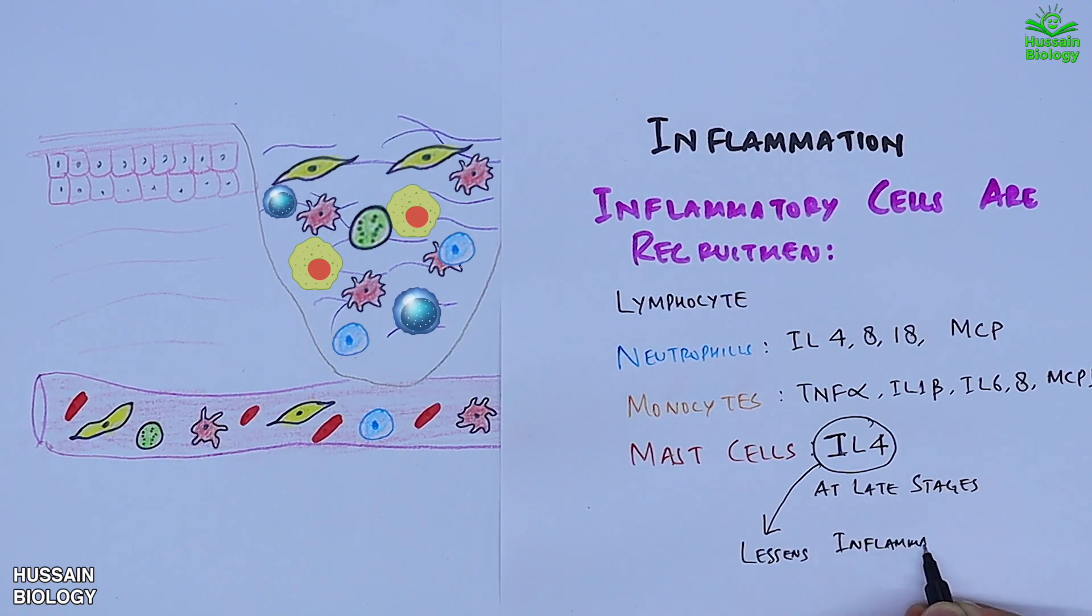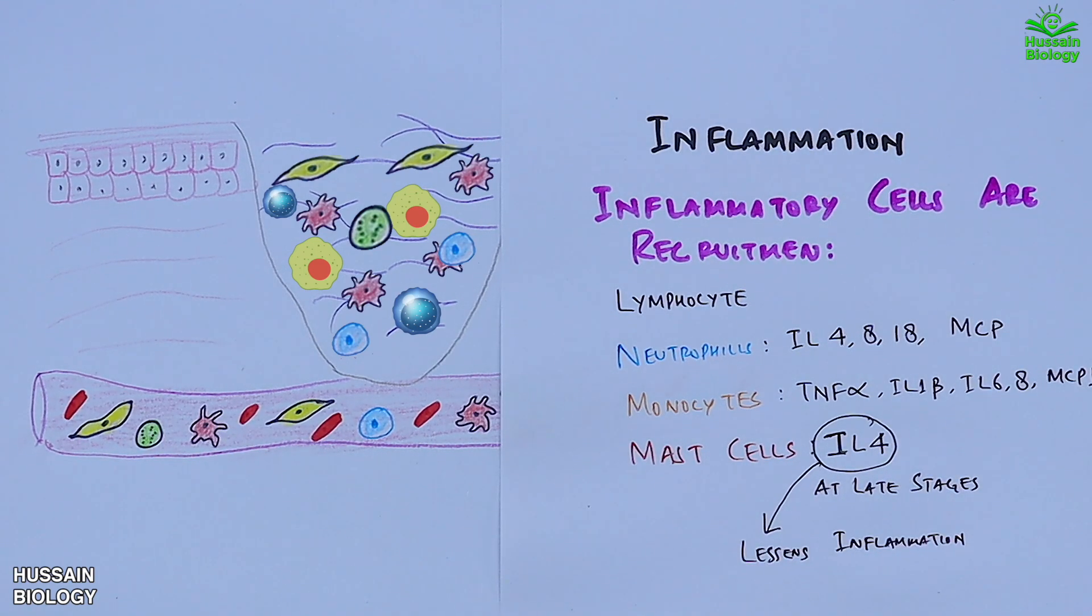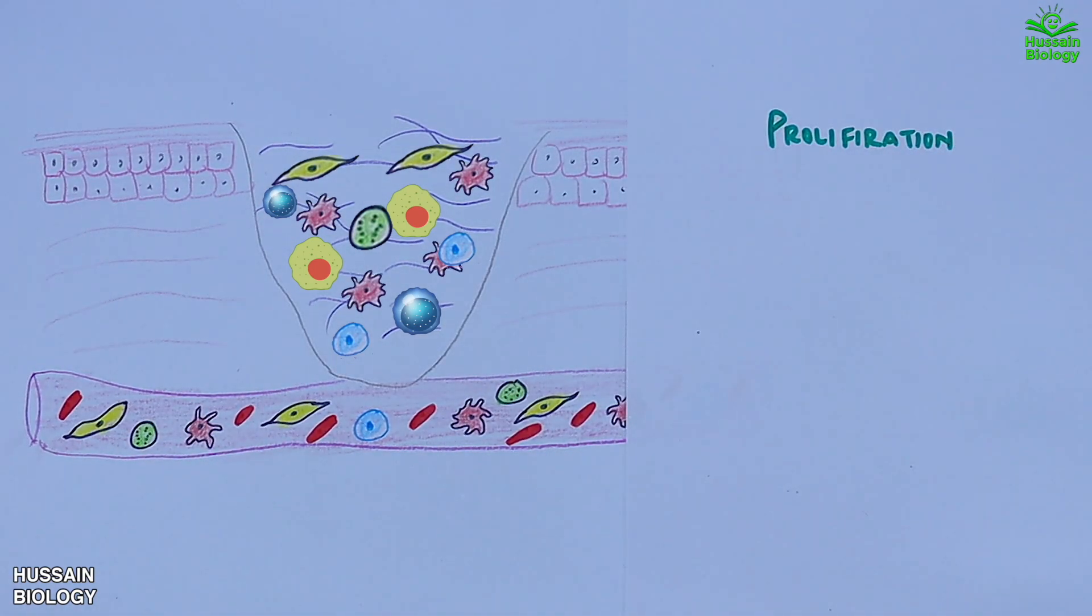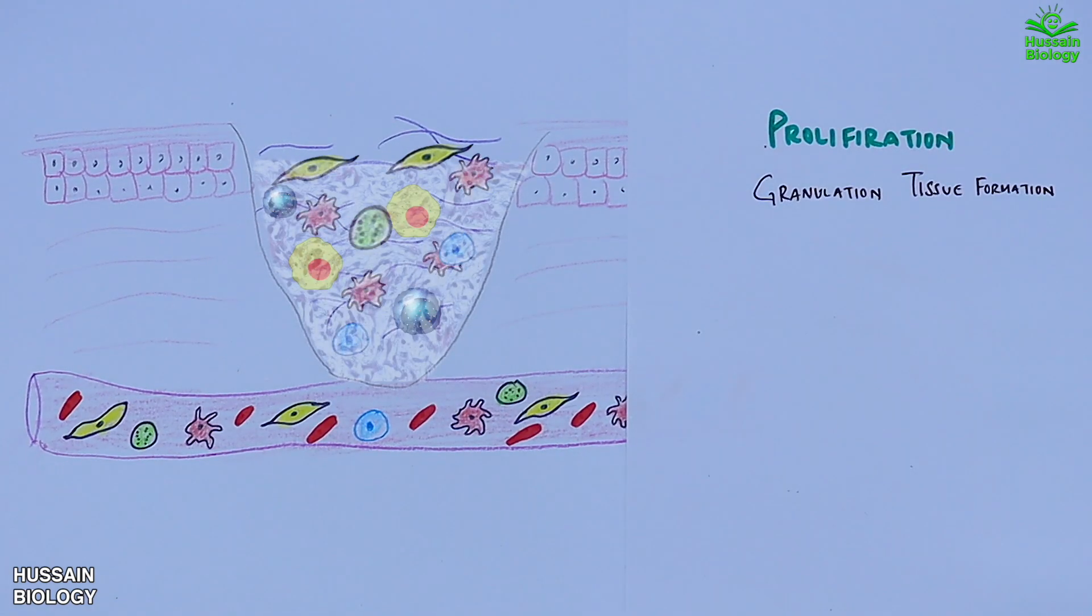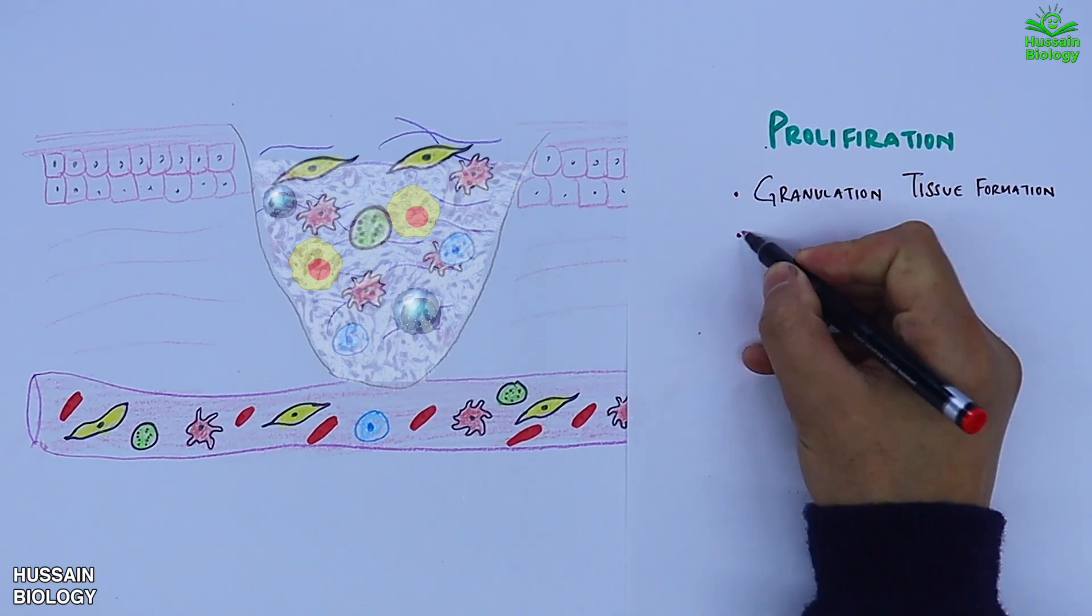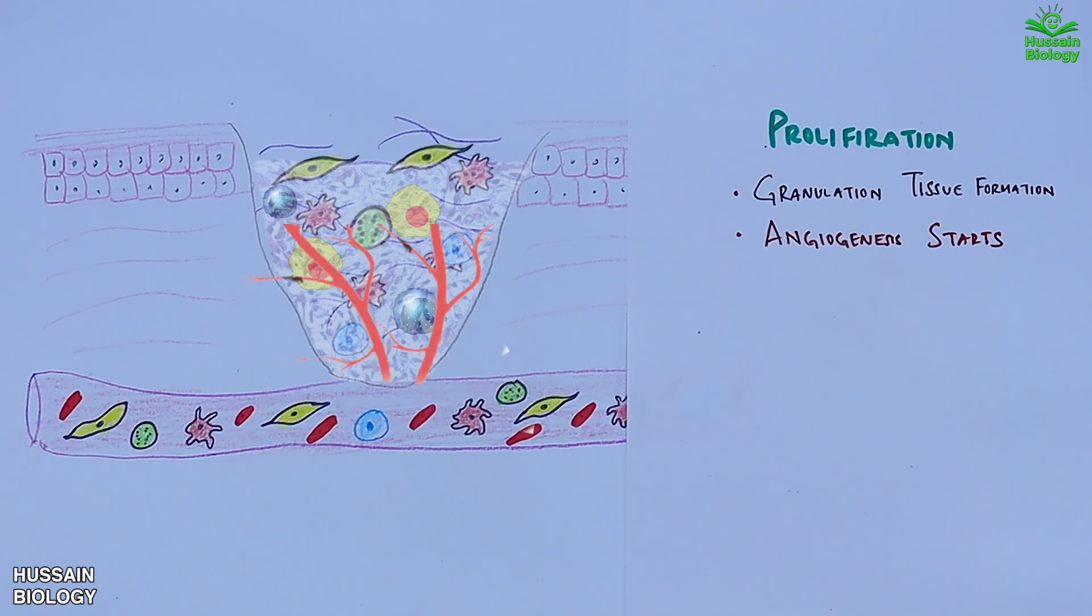Now when the inflammation starts receding, the proliferation step is mediated, where first of all we see the formation of granulation tissue, and then the angiogenesis starts, which have been shown in the diagram.